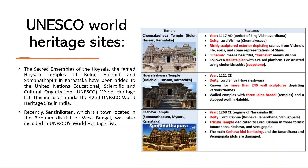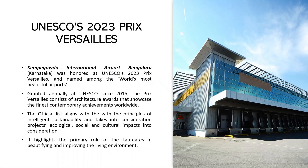The Hoysala Ensembles of Belur, Halebidu, and Somnathapura in Karnataka have been added to the UNESCO World Heritage List, marking India's 42nd UNESCO World Heritage Site. Santiniketan was also included as the 41st site. Additionally, Kempegowda International Airport in Bangalore was honored at UNESCO's 2023 Prix Versailles and named among the world's most beautiful airports.